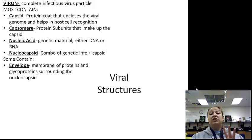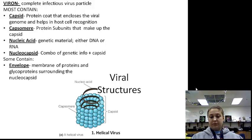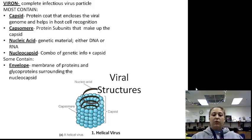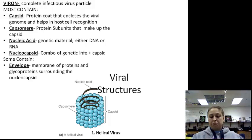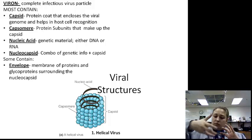Now let's take a look at some shapes. First, we have the helical virus, which has the capsid surrounding the nucleic acids or the genome. We have the capsomeres, which are each individual piece that makes up the capsid.